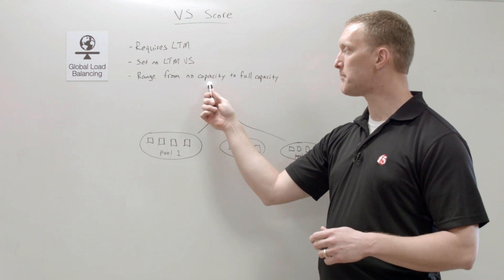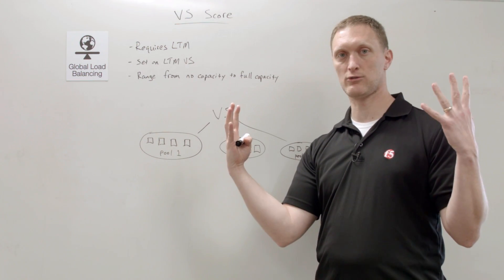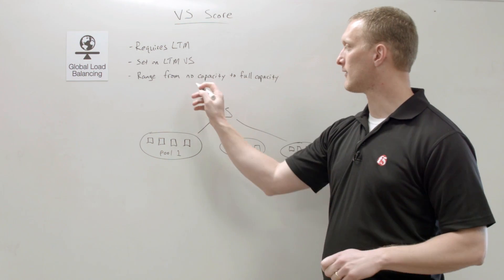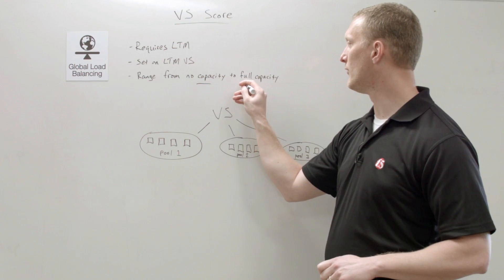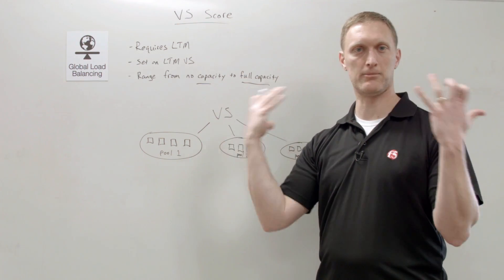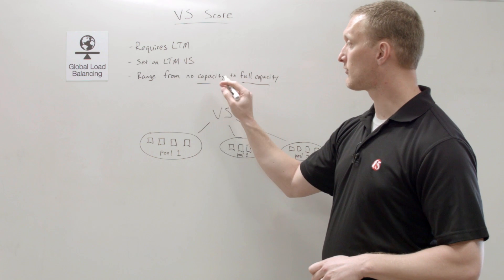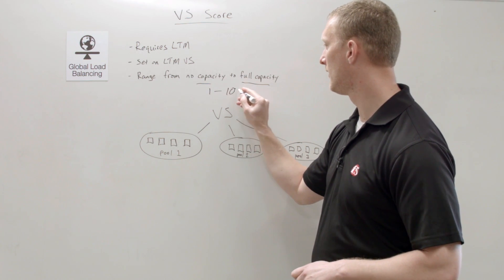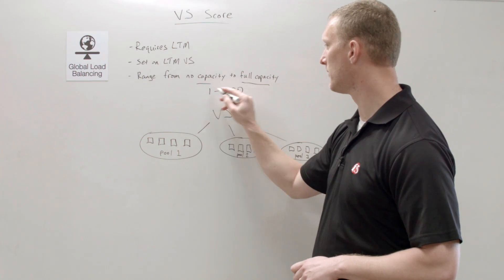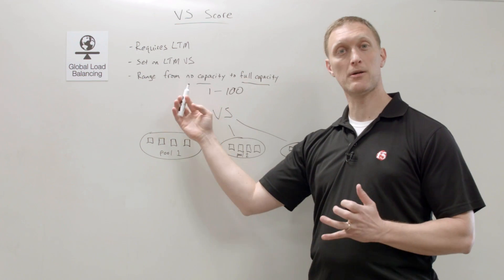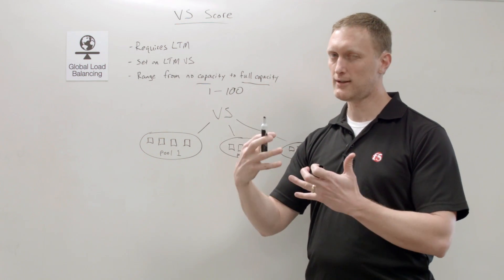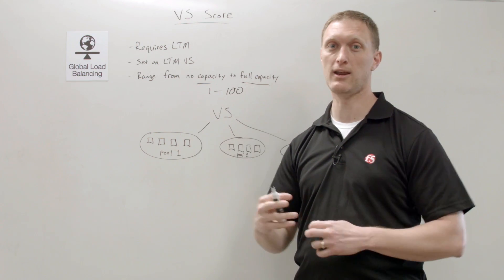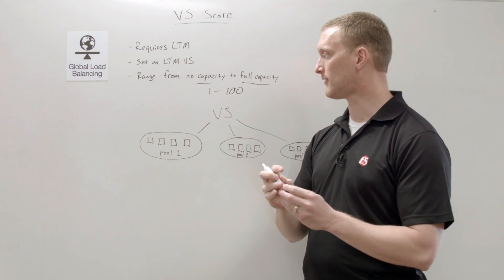The score ranges from no capacity — meaning this virtual server is completely full and has nothing left — to full capacity, meaning it can accept all kinds of traffic. That maps to a scale of 1 to 100, where no capacity is a score of 1 and full capacity is a score of 100.